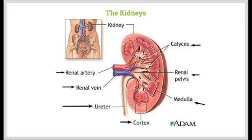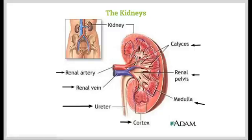The kidneys are part of the urinary system, and in mammals, the two kidneys are found close to the back wall of the abdominal cavity on either side of the vertebral column. There are a number of different structures that we need to become familiar with — this is just a little introduction, and then we're going to look at each one in more detail.